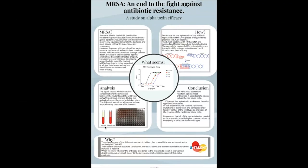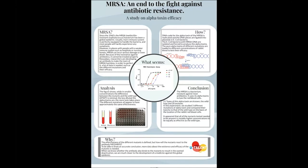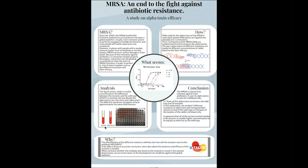All three tested mutants needed to be present in notably higher concentrations to be equally as effective as the wild type. The results indicate that contrary to our initial hypothesis, the wild type lyses more effectively than all three tested mutants, as it starts lysis in smaller concentrations. Now that the efficacy of the different mutants has been defined, the next step would be to test the difference compared to when the existing antibody is added. The antibody is currently in research circulation, diffusing the alpha toxins and thus the most harmful feature of the MRSA bacterium.